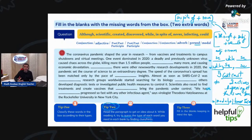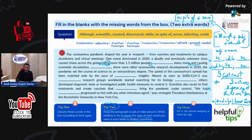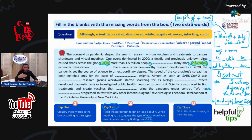A deadly and previously unknown virus caused chaos across the globe, killing more than 1.5 million people, a blank, many more, and causing. These are my indicators. So you see, these exercises revolve around finding indicators to help you find the correct answers. Then we have 'economic,' 'domestic' — so what can I need here? Maybe I will need a gerund.